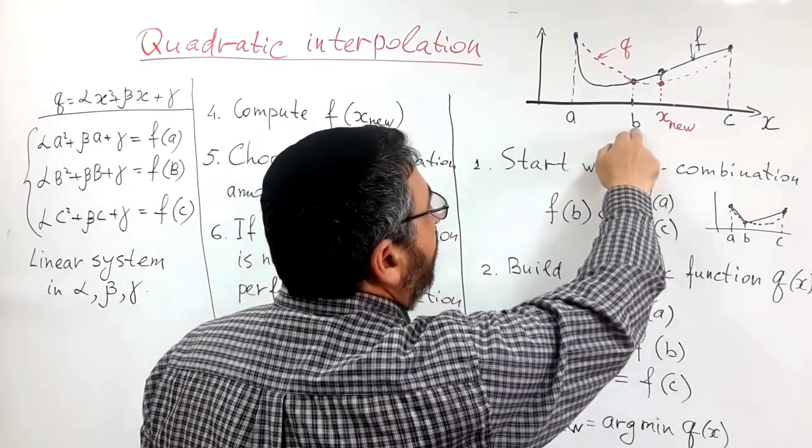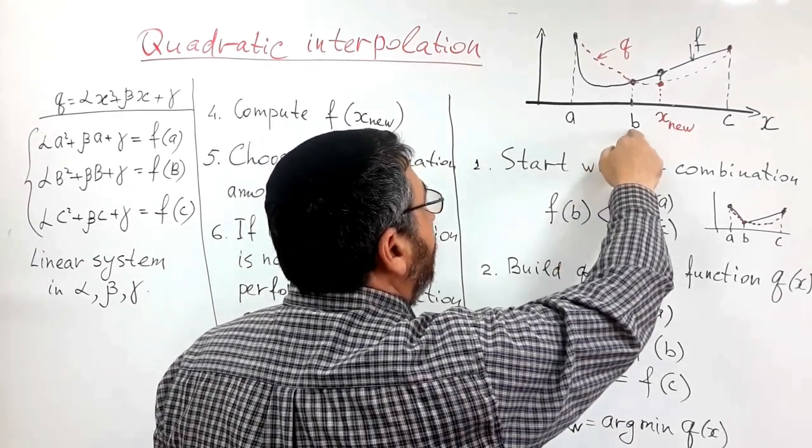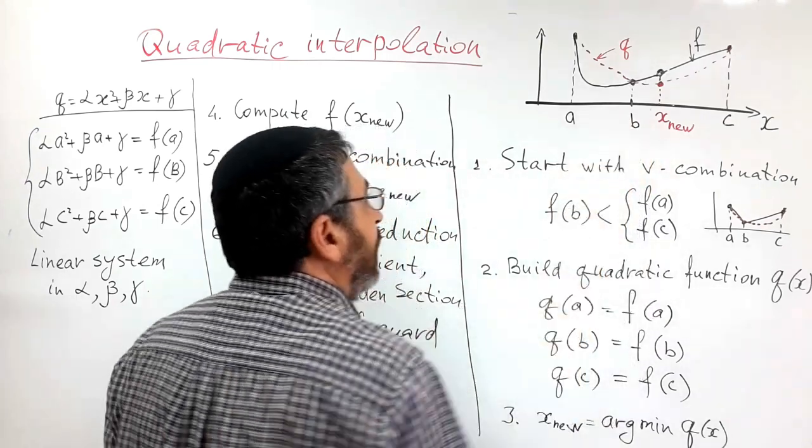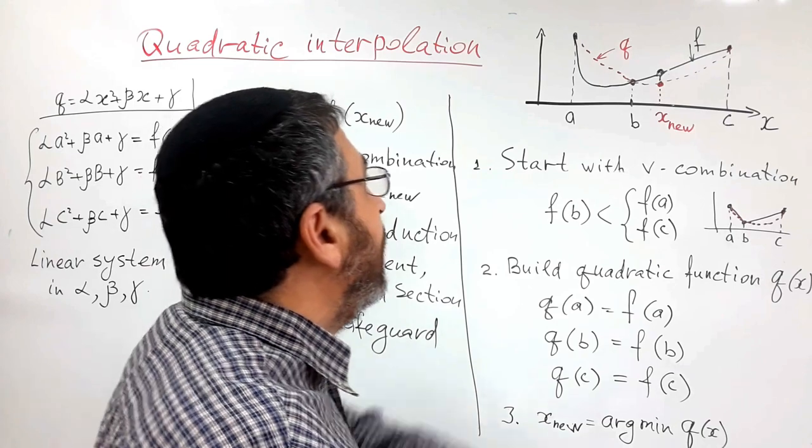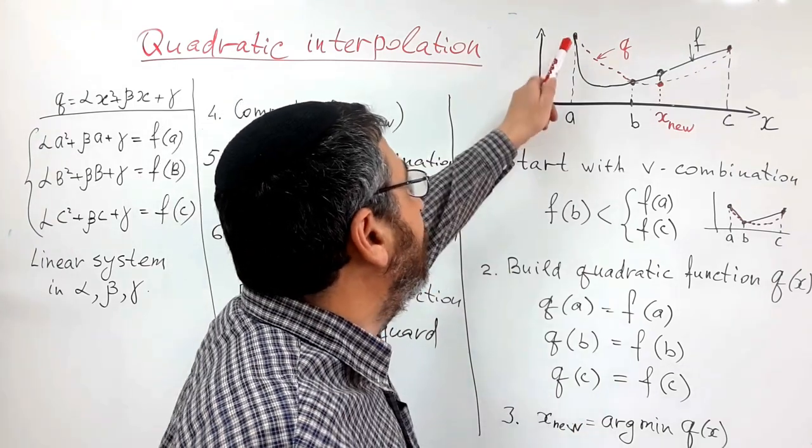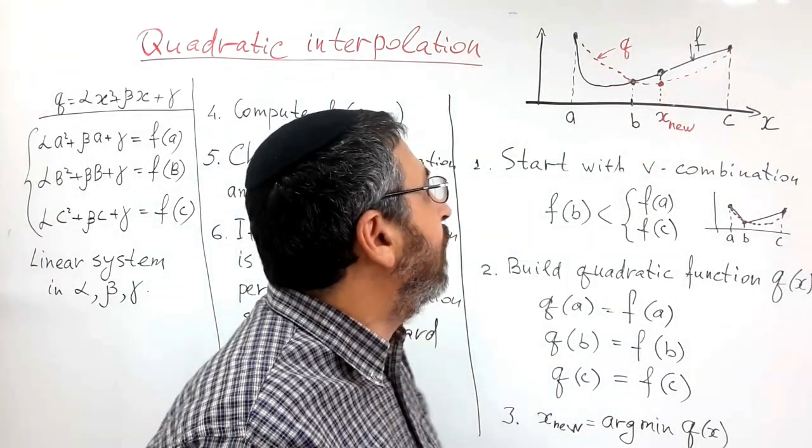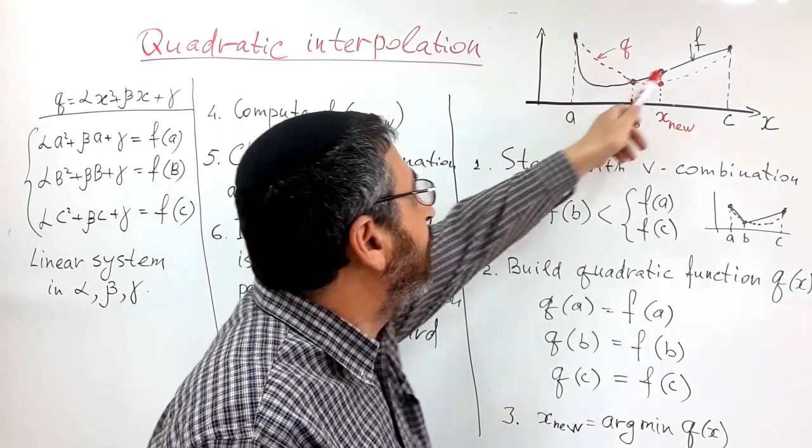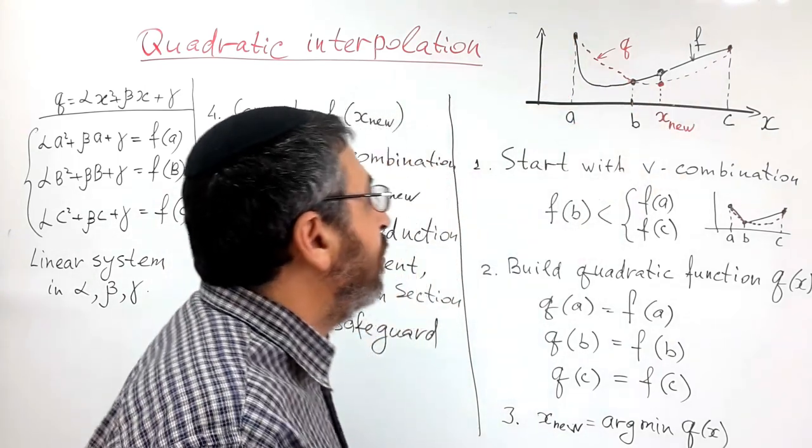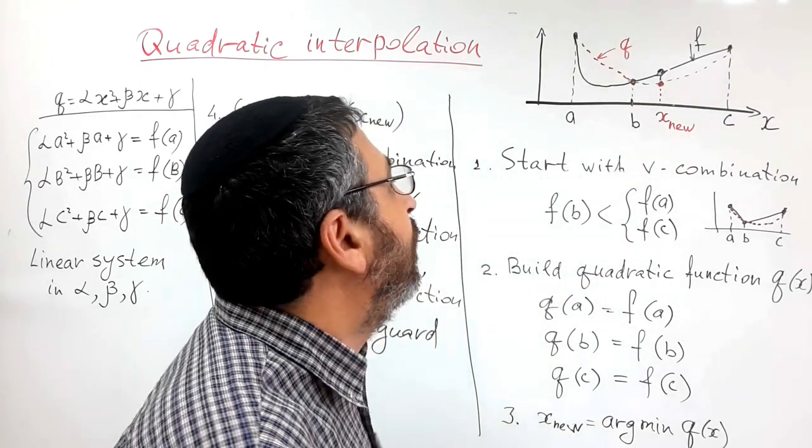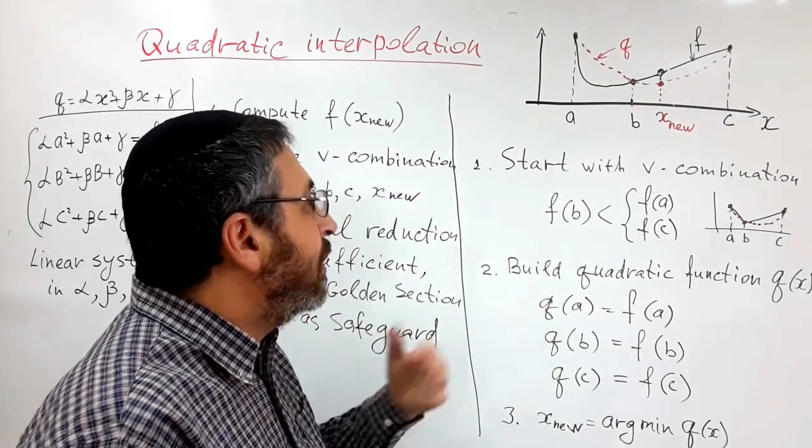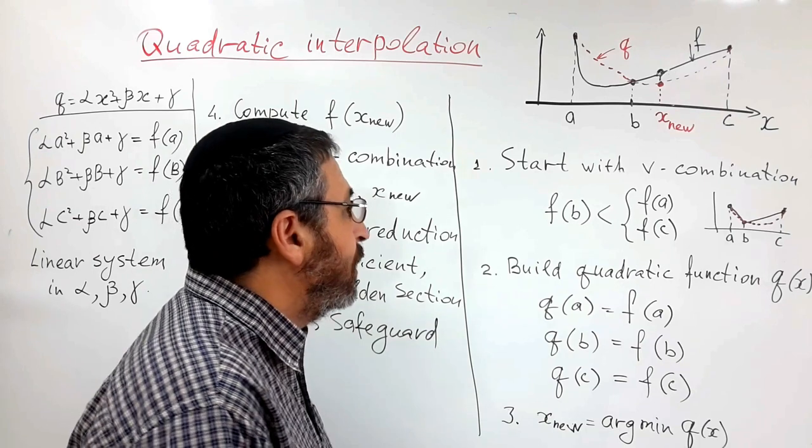Suppose that we also computed function value in some intermediate point of the interval, so we have function value in three points. What we can do is build a quadratic parabola which has the same function value at those points, and analytically find minimum of quadratic parabola, and this will be our next point.